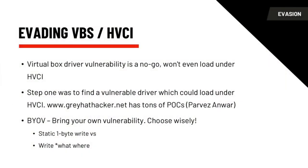We did really well in our red versus blue, which unfortunately meant we had a lot of work to do to improve our defensive tradecraft. When we got accepted to give this talk, we wanted to push further. Virtualization-Based Security combined with Hypervisor Code Integrity blocks any unsigned code from executing in the kernel — that includes Double Pulsar, TDL, and by extension our implant used in the red versus blue. So the question became: what can we do to actually evade HVCI and get kernel code execution under the latest Microsoft mitigations?